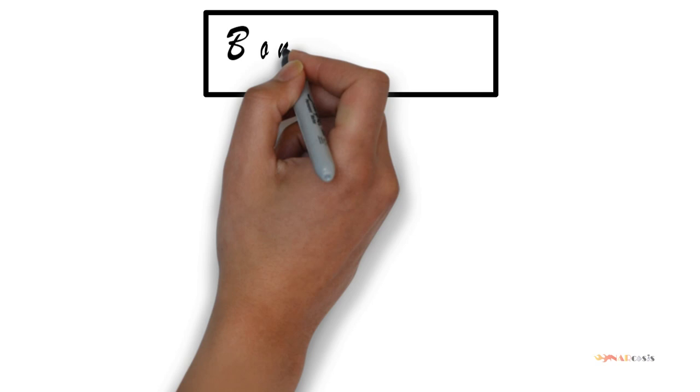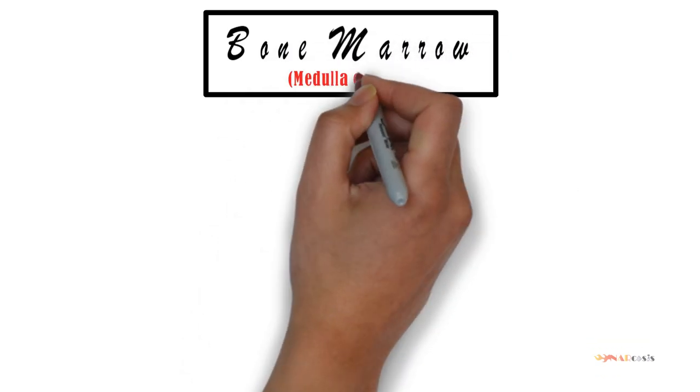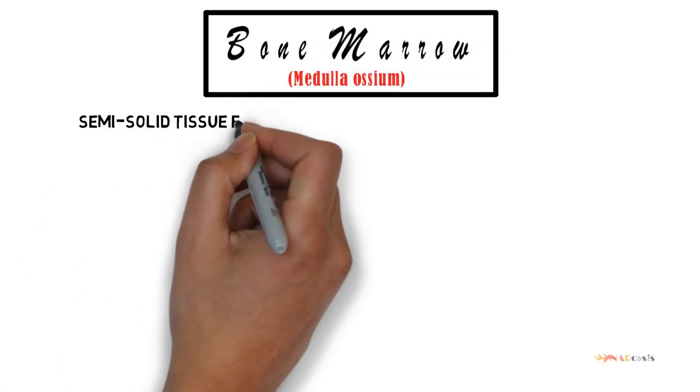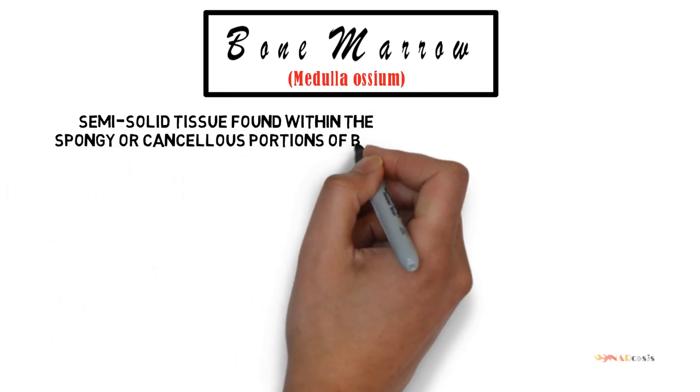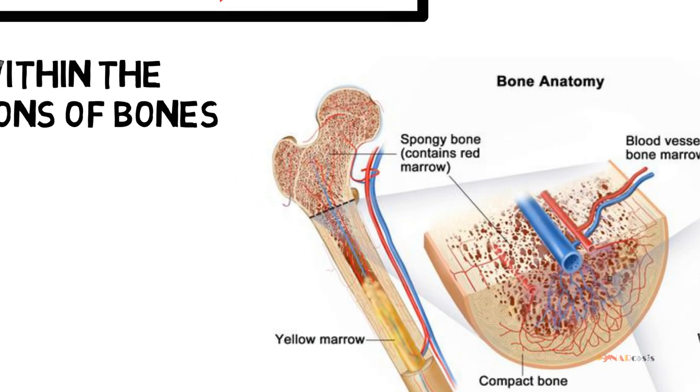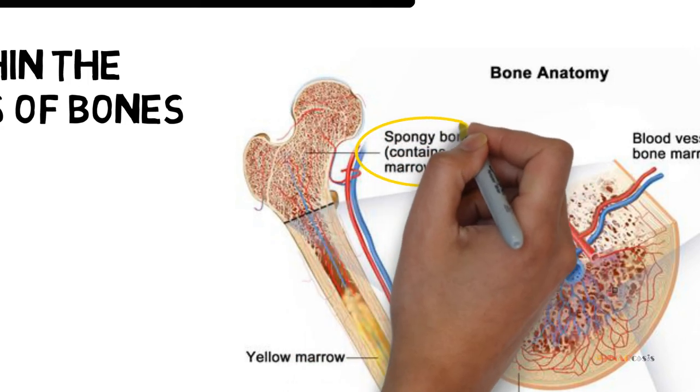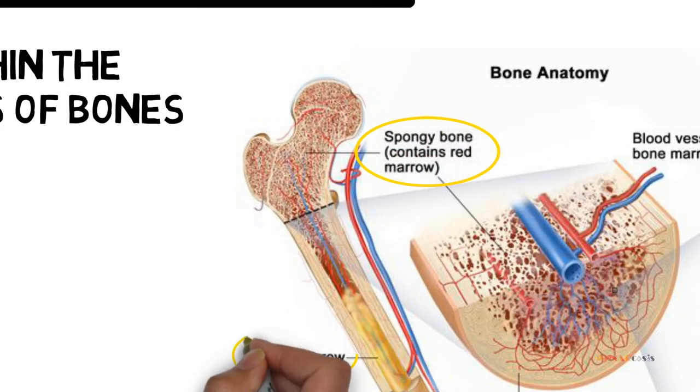The bone marrow, or medulla ossium in Latin, is semi-solid tissue found within the spongy bone or cancellous portions of bones. As we can see here, the cancellous bone, which is also called trabecular bone or spongy bone, is a light porous bone including numerous large spaces that give a honeycombed or spongy appearance.